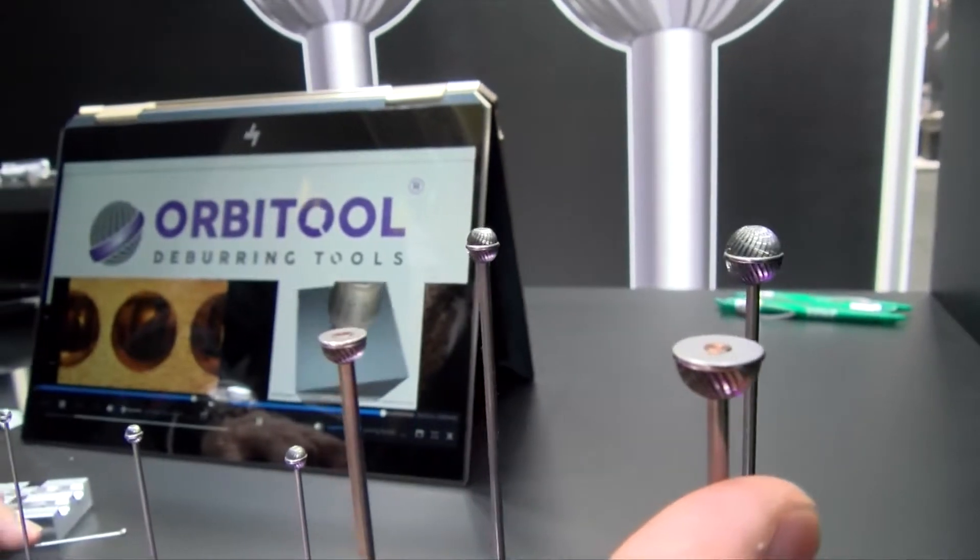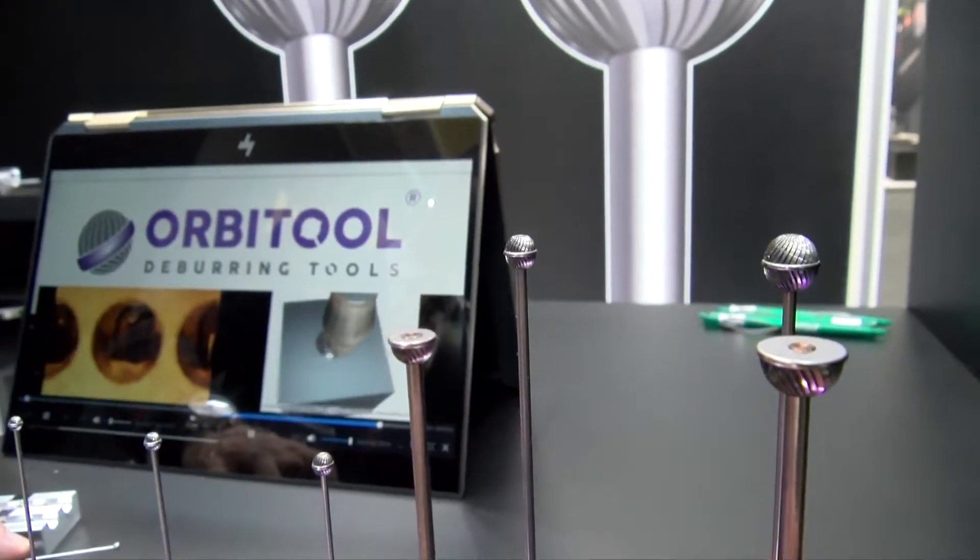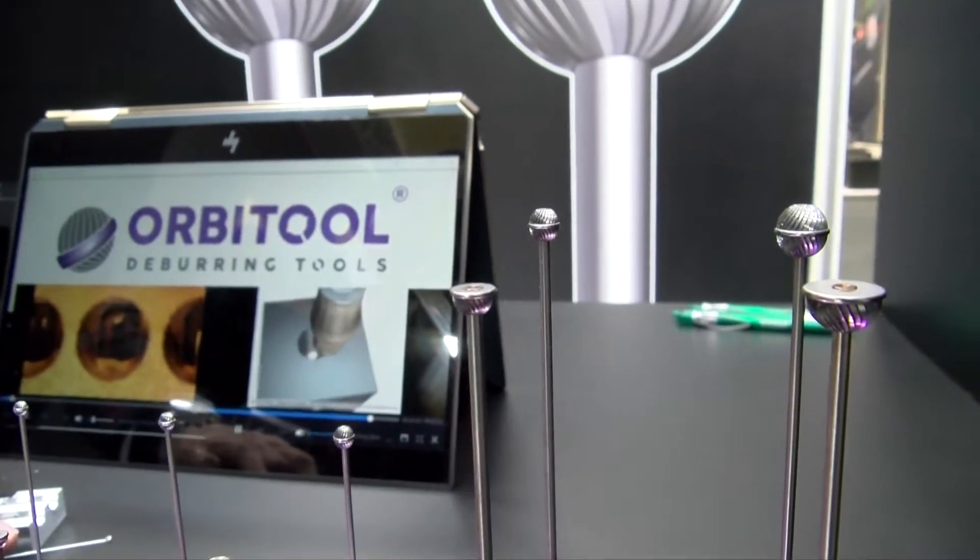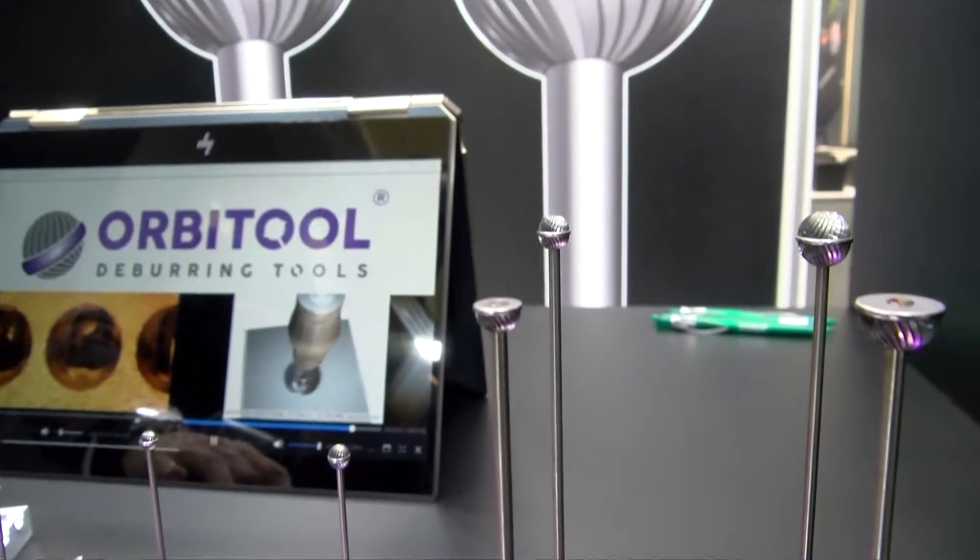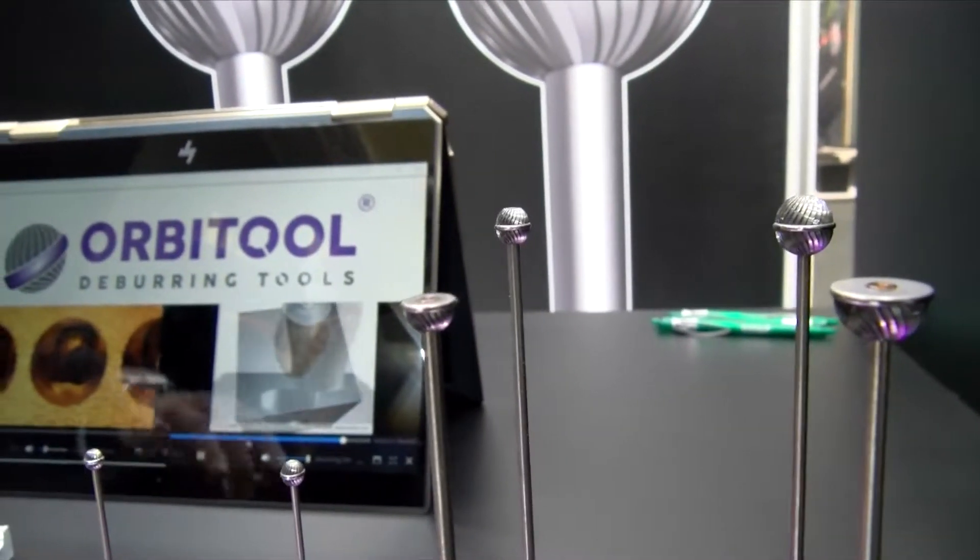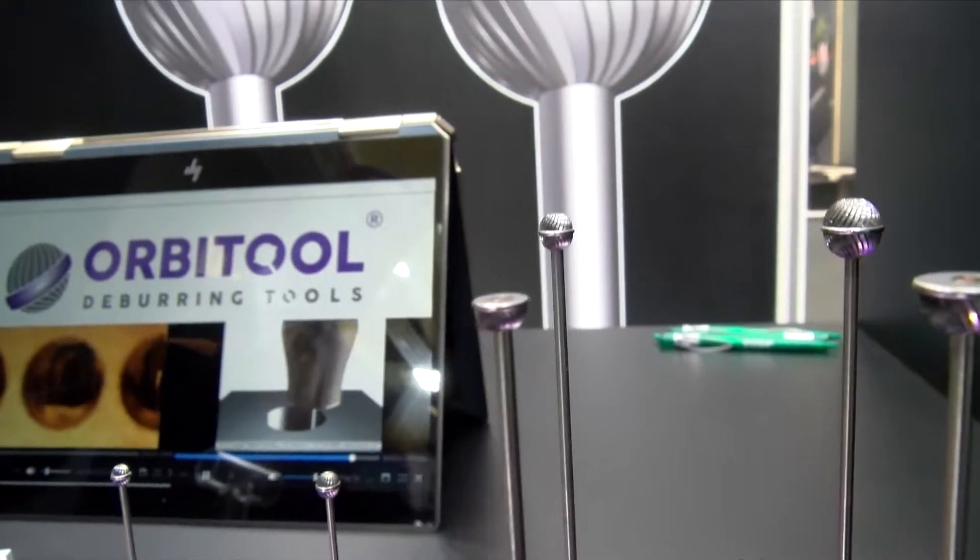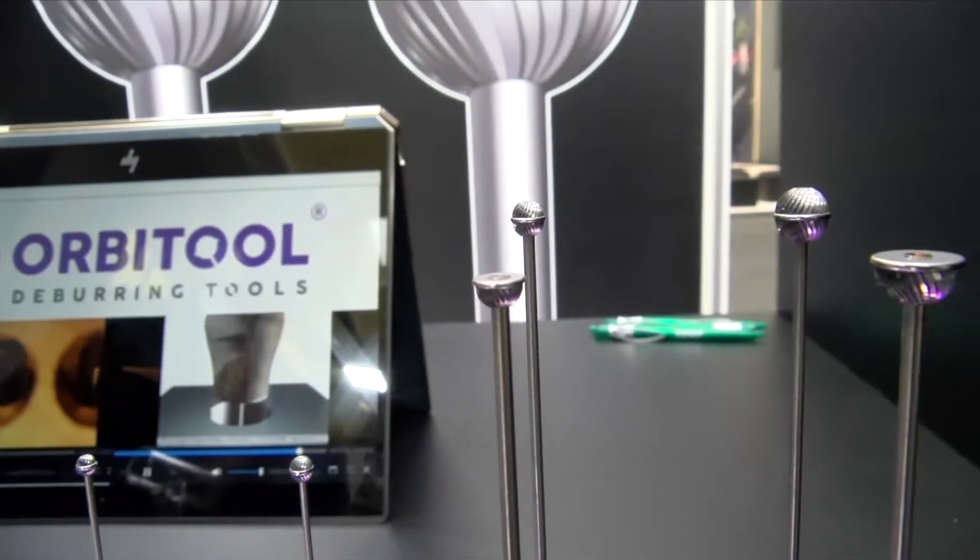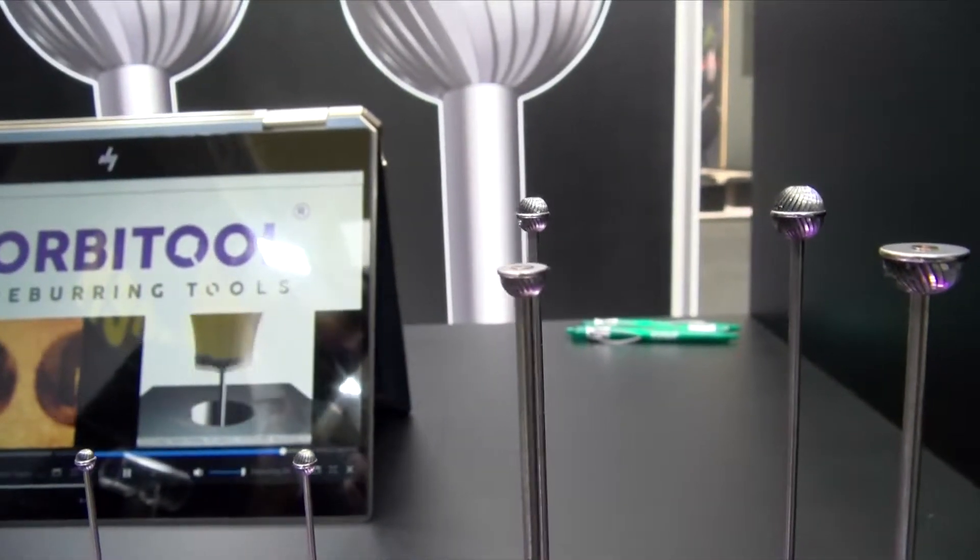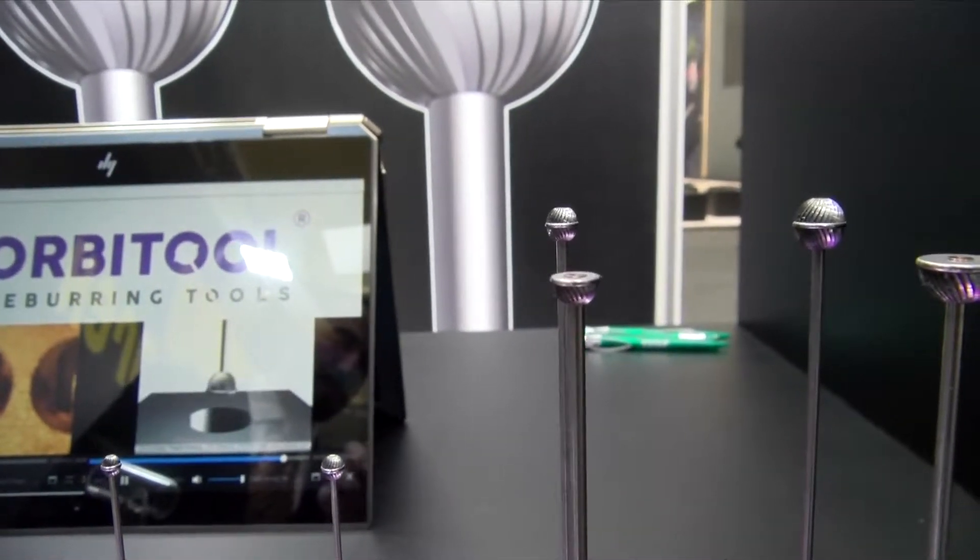Just behind that, you'll see the same 3 eighths cutter, but in a double hemisphere configuration. In this full range, we see single hemispheres and double hemisphere sizes. The single hemisphere tool will deburr a T-type intersection, T-fitting, elbow fitting, anywhere where you have only one edge that you need to deburr.